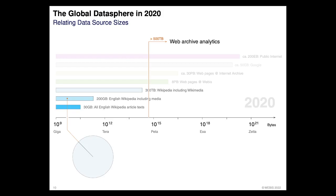People draw conclusions from analyzing Wikipedia that may or may not pertain to the entire society, as Wikipedia is a mirror of what happens in society to some extent. However, as you can see here, it makes up the tiniest fraction of everything — which is not bad, of course. It's a nice and very important collection.